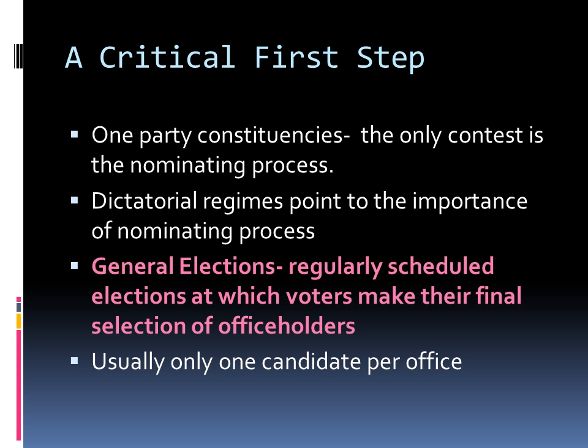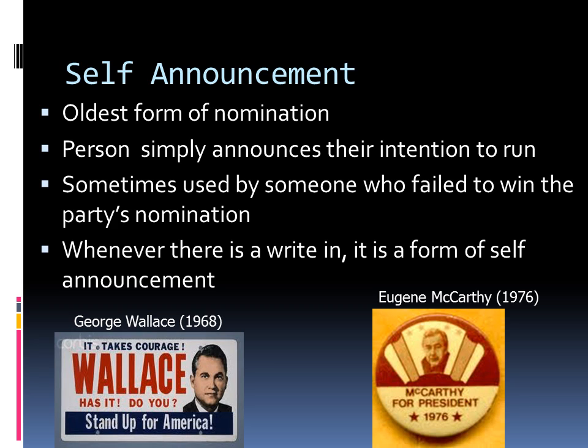We're going to start with self-announcement. Self-announcement is the oldest form of the nominating process in American politics. First used in colonial times, it is often found at the small town and rural levels in many parts of the country. The method is quite simple. A person who wants to run for office simply announces that fact. Modesty or local custom may dictate that someone else must make the candidate's announcement, but still, the process amounts to the same thing. Self-announcement is sometimes used by someone who failed to win a regular party nomination, or by someone unhappy with the party's choice. Note that whenever a write-in candidate appears in an election, the self-announcement process has been used.